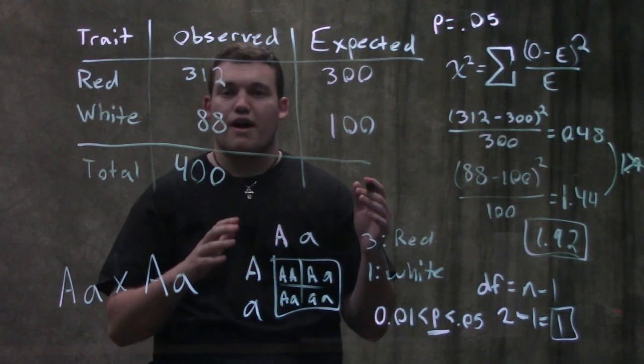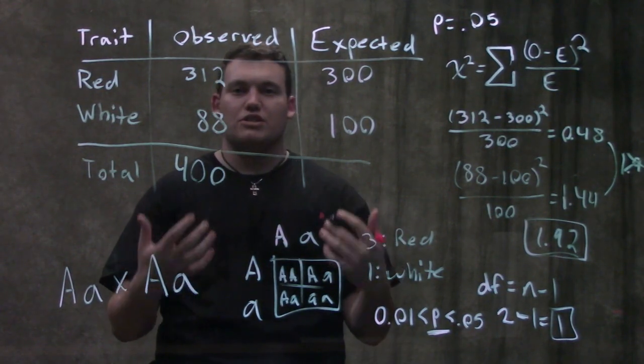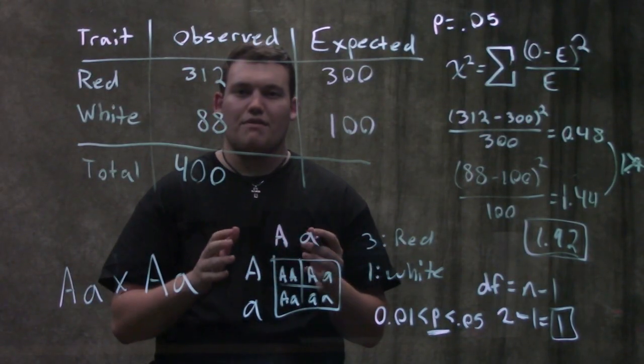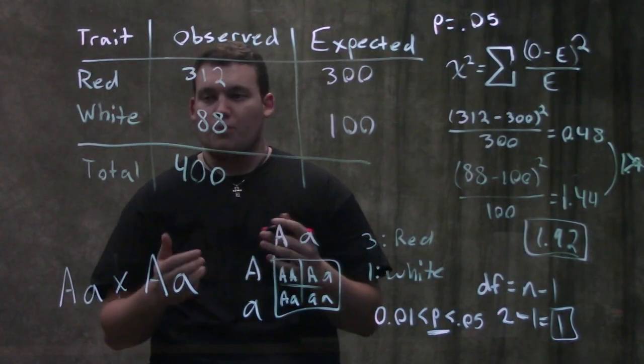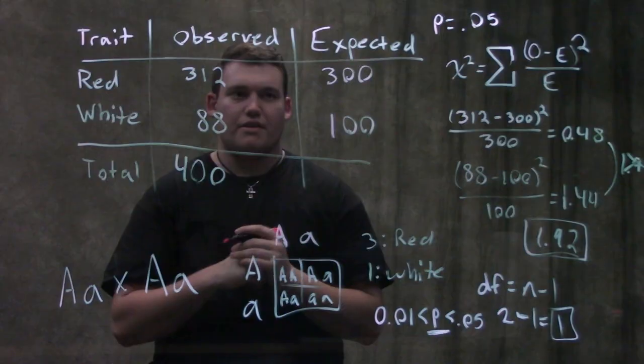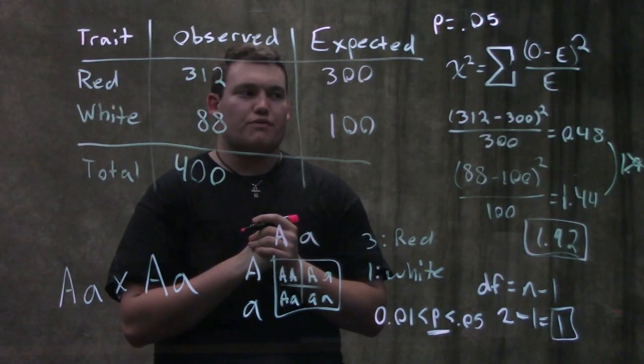So that means at the 0.05 significance level, we actually do have proof because it is lower than 0.05. That's an important thing to keep in mind. If that p-value is lower than 0.05, we do have pretty good reason to believe that this is different. This is going to be different than our actual value.